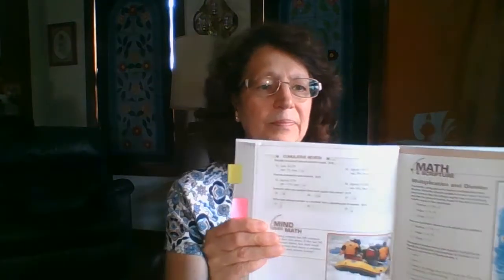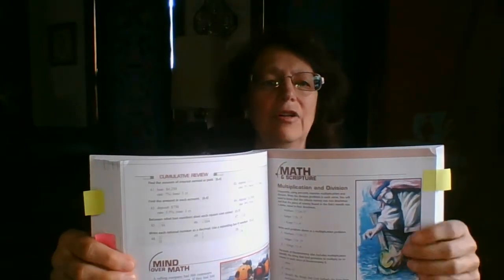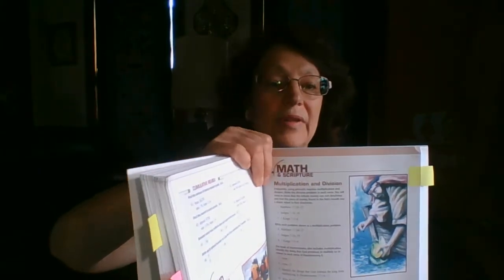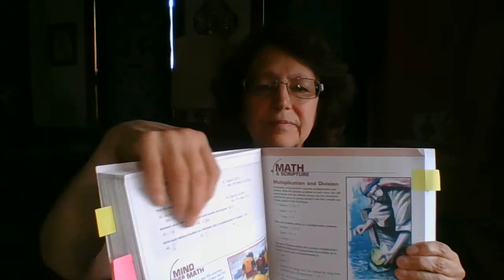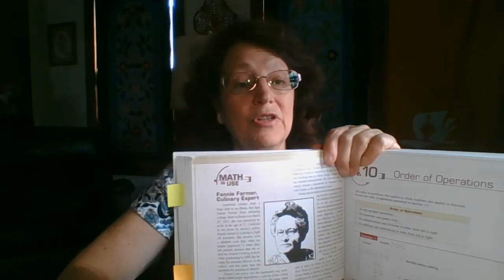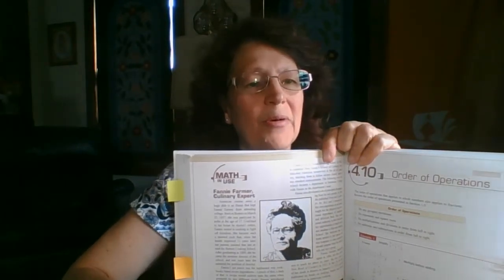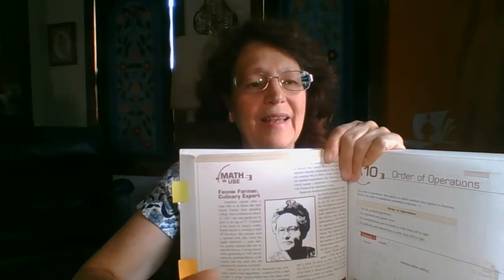In every chapter there are special features. One of them is the Math in Scripture section, which shows where math is actually in the Bible and includes questions to go with that. Another section I really like is Math in Use — it highlights a Bible character, inventor, discoverer, or innovator and their contribution to the field of math or science. This one's on Fanny Farmer, who has a very interesting biography, and it's fun to show kids her cookbook and what she did to standardize the cooking process.